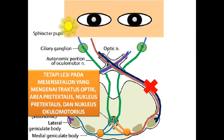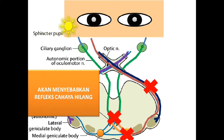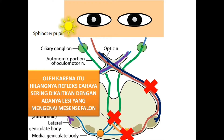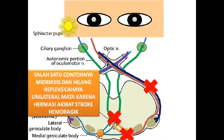Tetapi lesi pada mesensefalon yang mengenai traktus optik, area pretektalis, nukleus pretektalis, dan nukleus oculomotorius akan menyebabkan hilangnya refleks cahaya. Oleh karena itu, hilangnya refleks cahaya sering dikaitkan dengan adanya lesi yang mengenai mesensefalon. Salah satu contohnya adalah midriasis dan hilangnya refleks cahaya unilateral mata karena herniasi akibat stroke hemoragik.